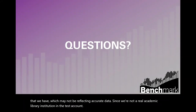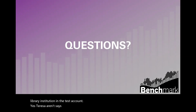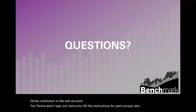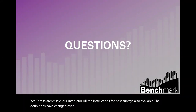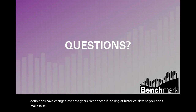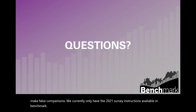Are all instructions for past surveys also available? The definitions have changed over the years, and you need these if looking at historical data to avoid false comparisons. We currently only have the 2021 survey instructions available in Benchmark, but we can certainly add prior instructions in the resources tab — thank you for the suggestion. If you had previously subscribed to ACRL metrics, your subscription has been successfully transferred to Benchmark.